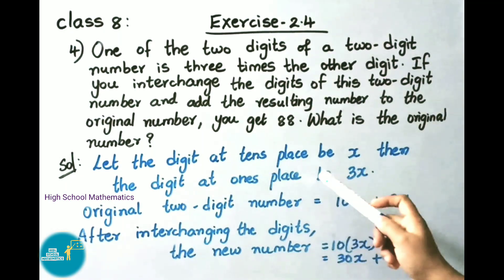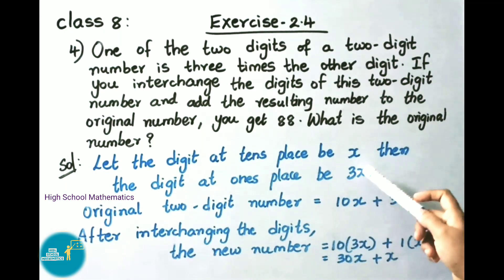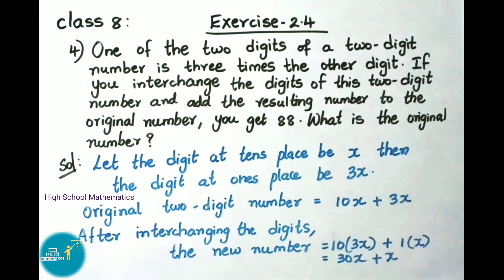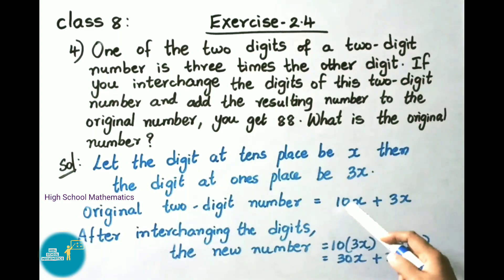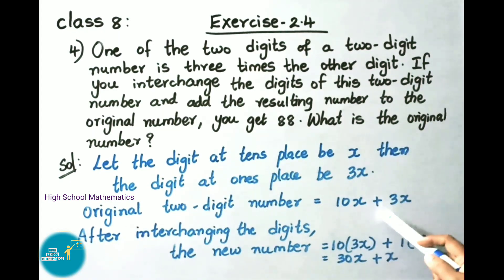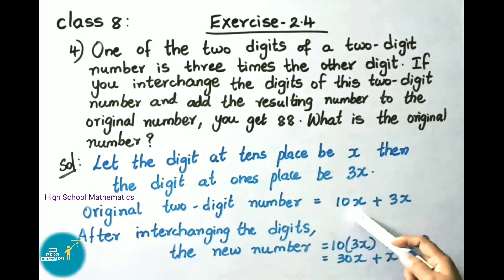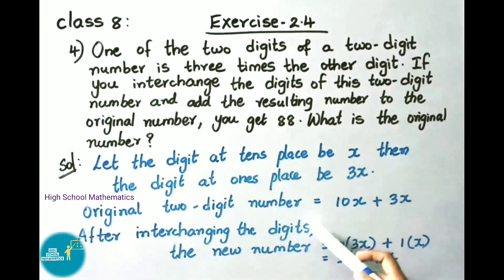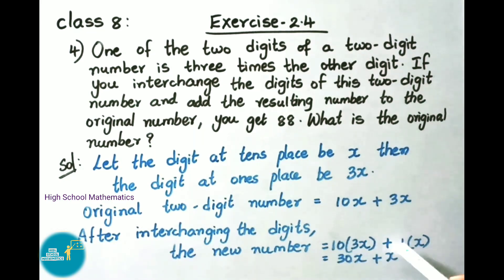Let us see the solution. Let the digit at the 10's place be x, then the digit at the 1's place is 3x. The two-digit number is 10 × x + 3x × 1, which becomes 10x + 3x. After interchanging the digits, the new number will have 3x at the 10's place and x at the 1's place.